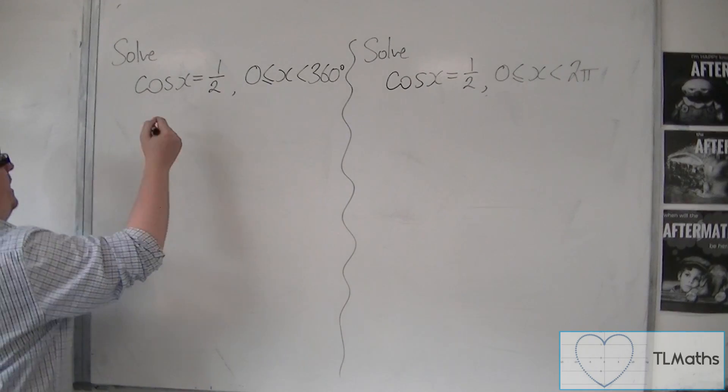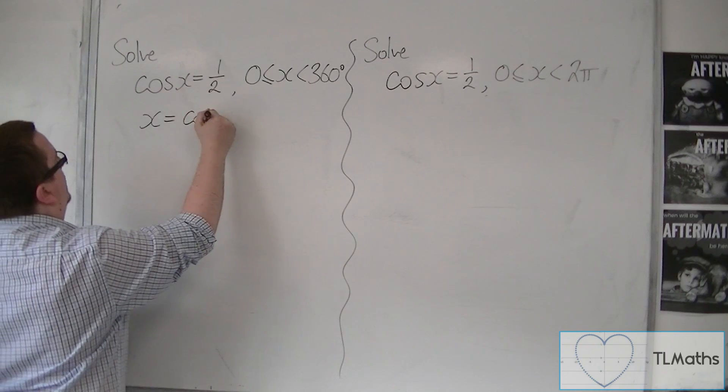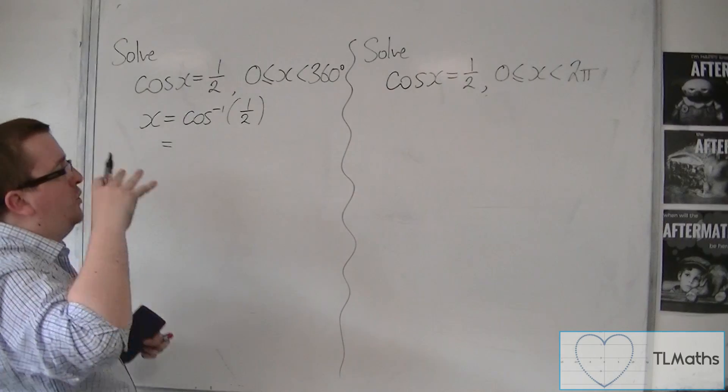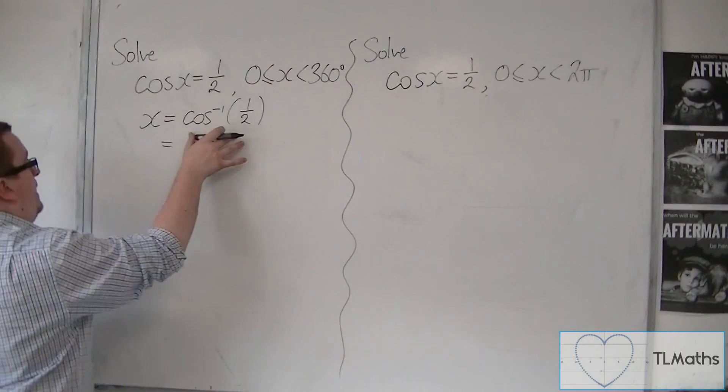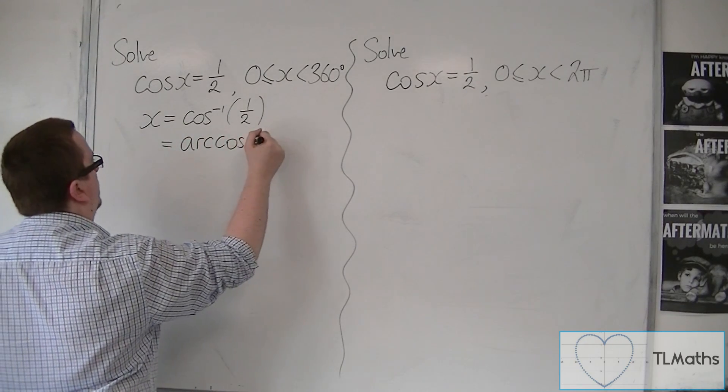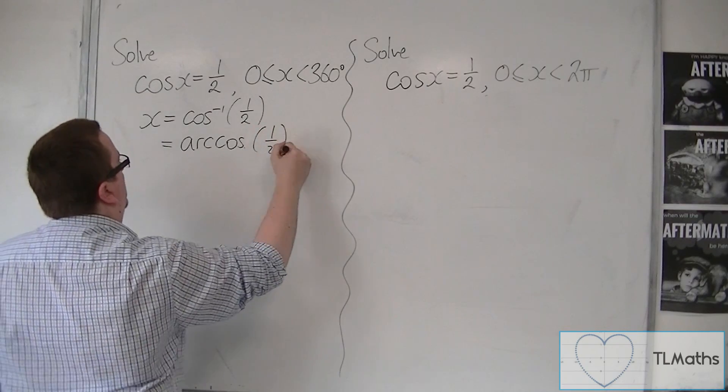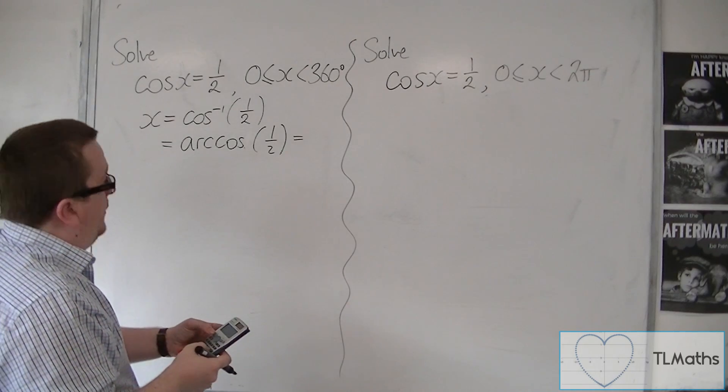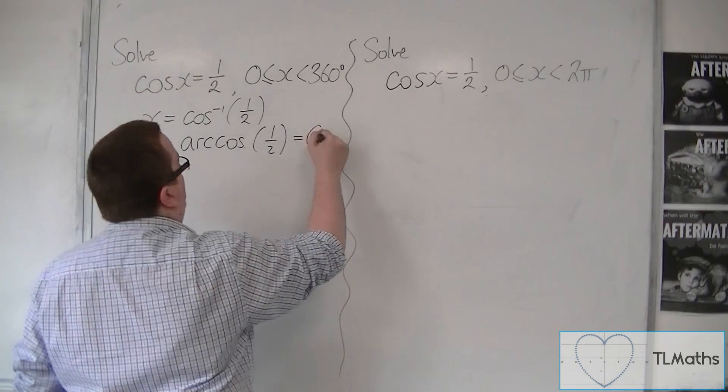We first of all inverse cos, so x is equal to the inverse of cosine of 1 half. And much like we could write inverse sine as arc sine, we can write inverse cos as arc cos. So arc cos of 1 half. Both of these are exactly the same. In degrees, inverse cos of 1 half is 60, so 60 degrees.